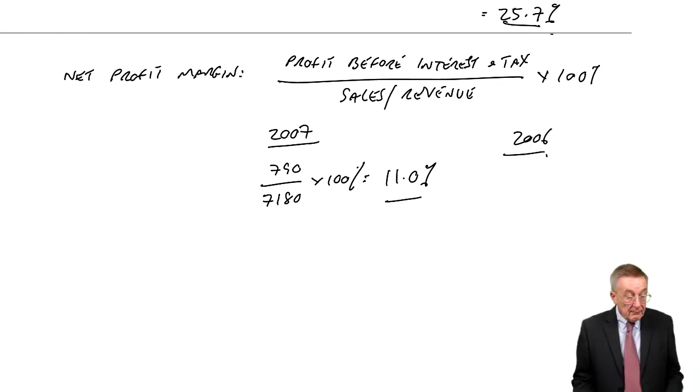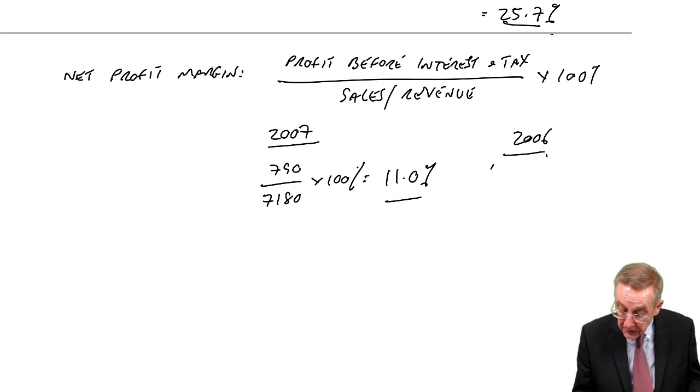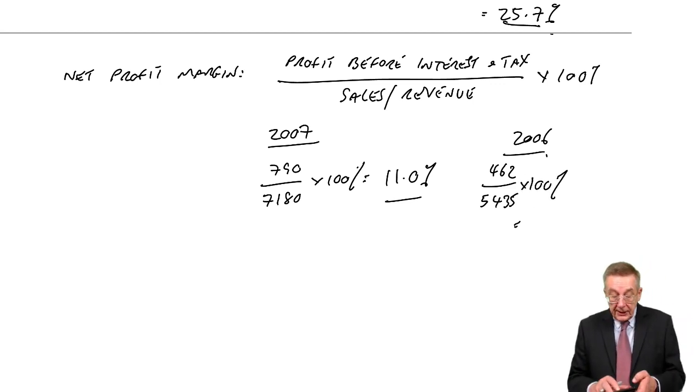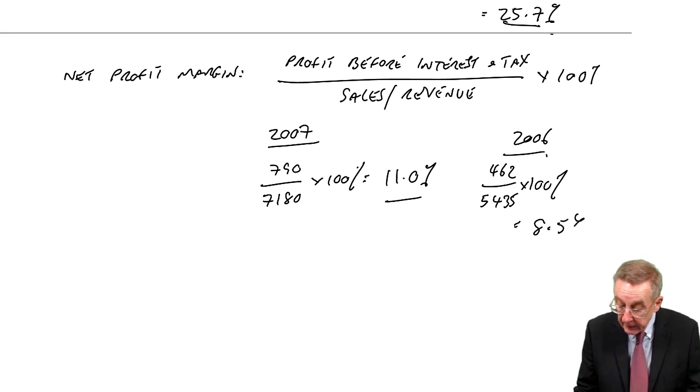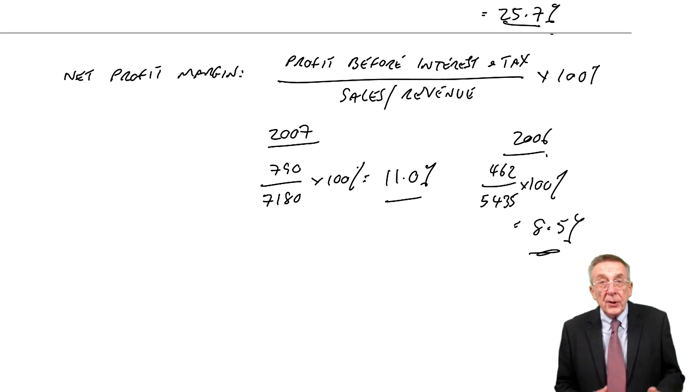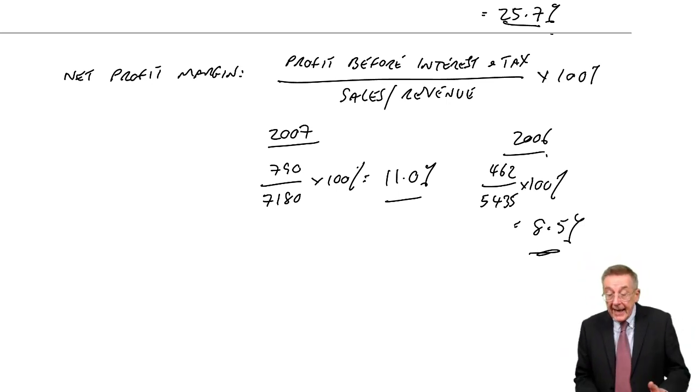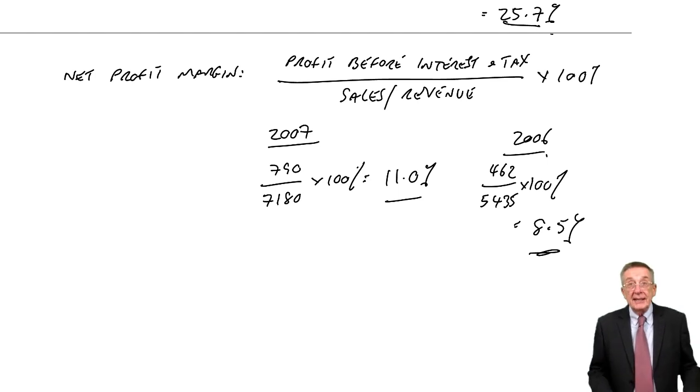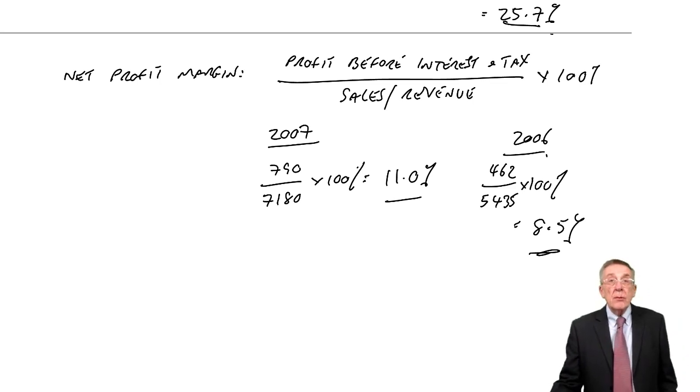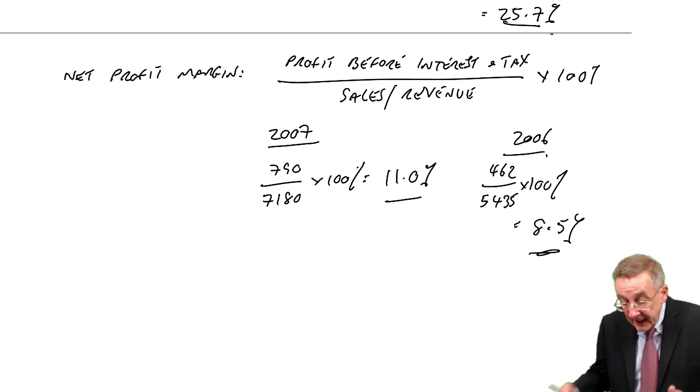In 2006, what was it? The profit was a lot less at 462. But of course, the revenue, the sales were a lot less at 5435. So more importantly, in percentage terms, it was 8.5%. So what does that mean? It means everything they're selling, they're making more profit on. Maybe they've increased the selling price or maybe they've cut costs. But again, surely that's a good sign. We want to be more profitable in that sense.